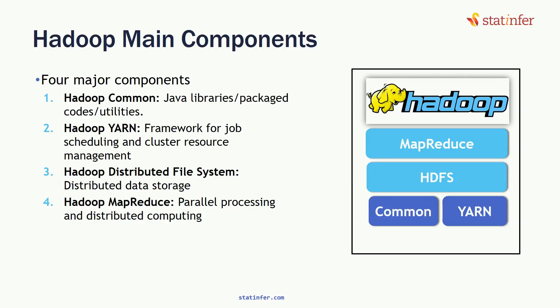So Hadoop has four major components: Hadoop Common, Hadoop YARN, Hadoop Distributed File System, and Hadoop MapReduce. Hadoop Common and Hadoop YARN we don't need to use right away — Hadoop YARN is for bigger clusters of computers. Right now, the two major components we need to focus on are Hadoop Distributed File System and Hadoop MapReduce.